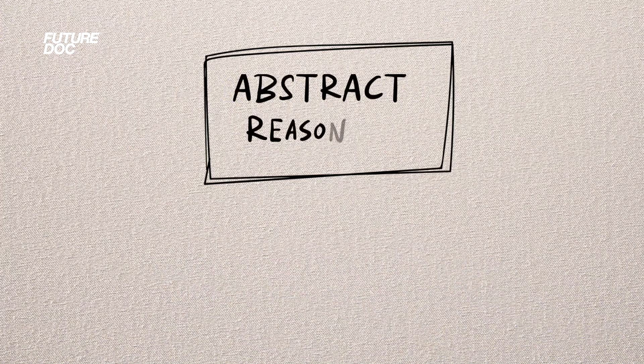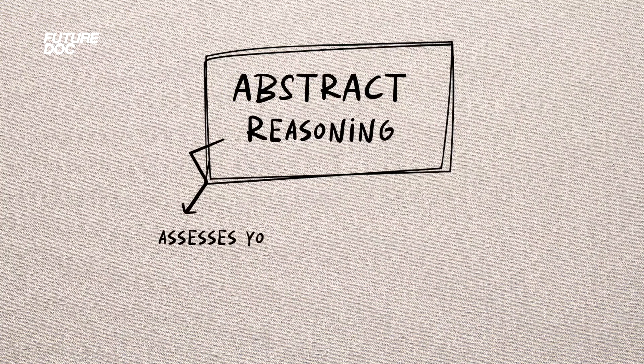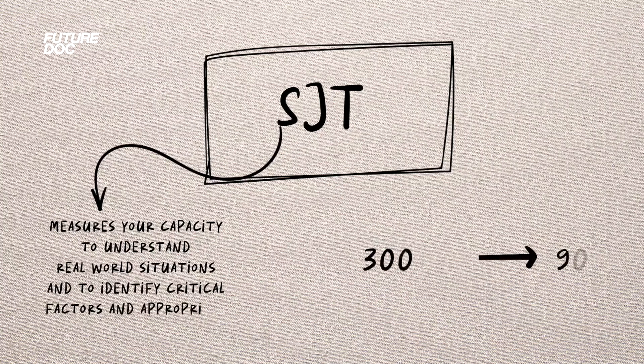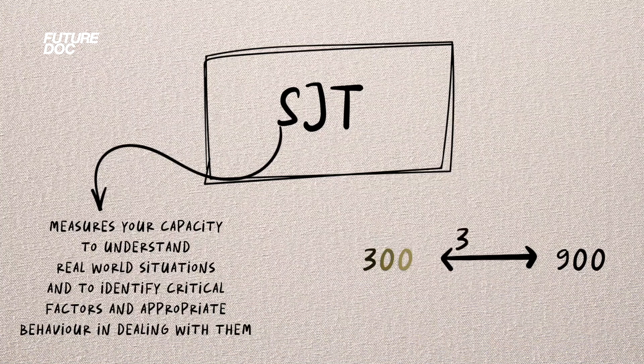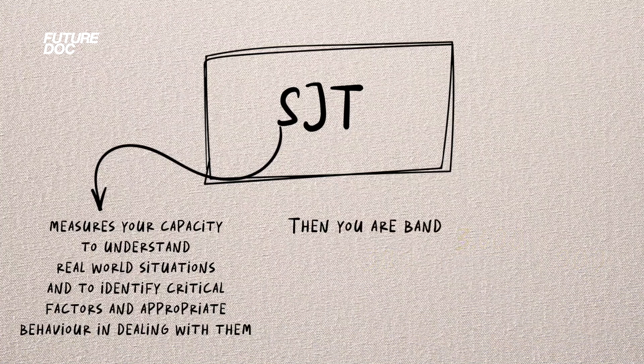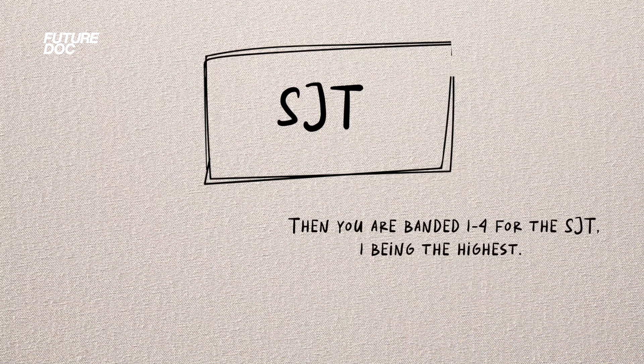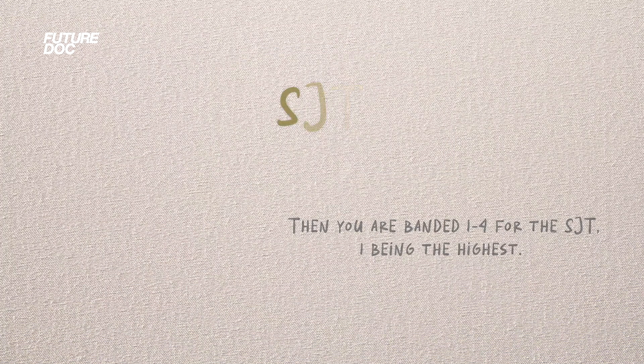The UCAT is split into five sections. I'm going to put on screen how many questions you get for each and the time allocated to each section. The first is verbal reasoning, and that subtest assesses your ability to read and think carefully about information presented in passages. When you become a doctor or dentist, you'll have to sift through lots of notes when a new patient comes and try to get a comprehensive but quick understanding of what is going on with them. This is testing that very same ability.